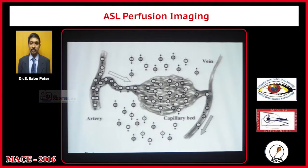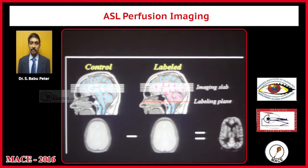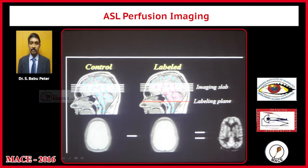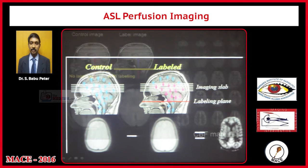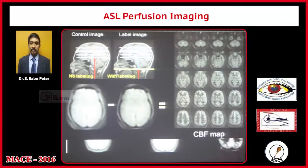The tagged blood goes into the arteries, then comes back to the vein and we get the image. This is basically what we do — you have a control image and there is a labeling plane. You apply the pulses, take the scan, and this is an image without labeling and that is with applying an inversion recovery pulse inferiorly, then you acquire the images after the post-labeling delay.